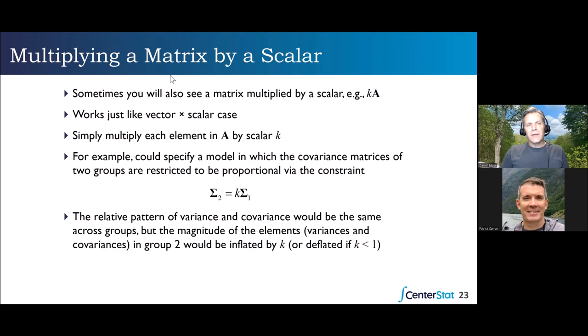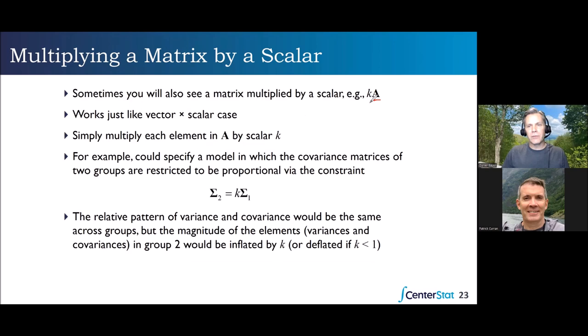Just as multiplying a vector by a scalar multiplies each element in that vector by the scalar, the same thing happens when we multiply a matrix by a scalar. We have matrix capital bold A multiplied by scalar K, and we just multiply each element in A by that scalar K.